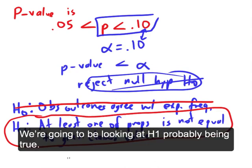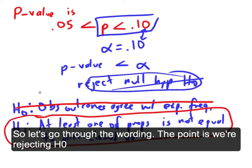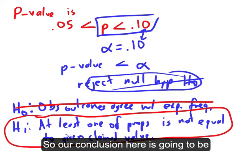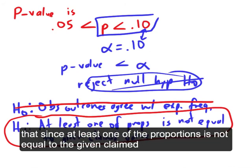Okay, so we're going to be looking at H1 probably being true. So let's go through the wording. The point is we're rejecting H0. So we're going to reject that the observed outcomes agree with the expected frequencies.